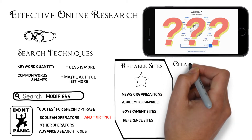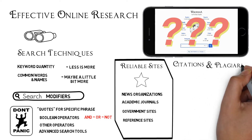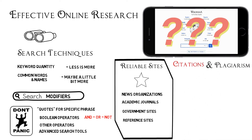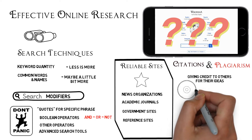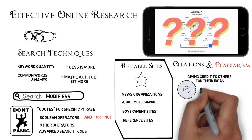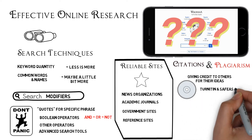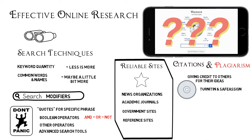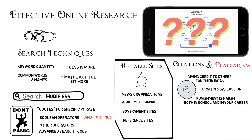Getting the information is one thing, but a very important aspect of research is crediting the ideas of others. This leads us to citations and plagiarism. Turning in the work of another as if it was your own, or failing to cite the source of your work, is known as plagiarism. Many schools now use software such as Turnitin or SafeAssign to scan students' papers for plagiarism and excessive copying from the web. Punishments for plagiarism can be severe, including expulsion from the college.